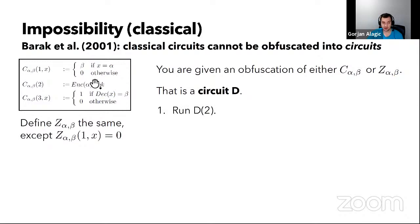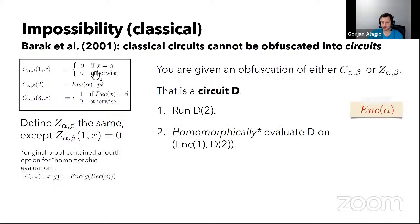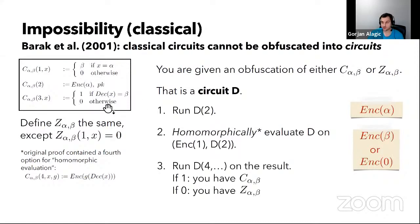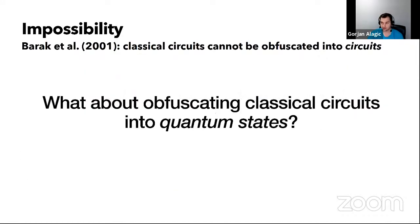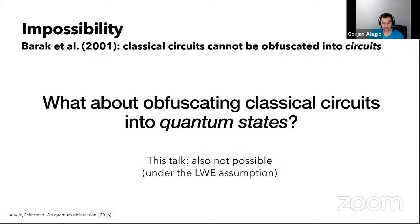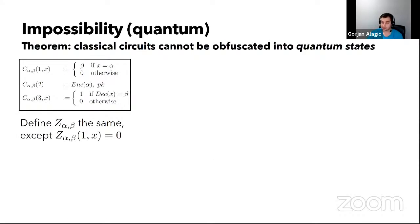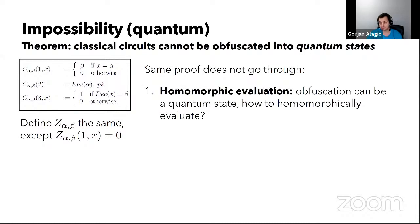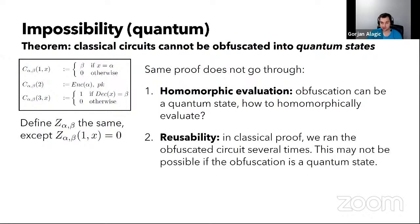It's pretty easy to tell with only oracle access that you can't distinguish these two families. However, with a circuit you can. The easiest way to see this nowadays is using homomorphic encryption. The first step is to simply extract this encryption of the special input, then to homomorphically evaluate the circuit on that. That gives you an encryption of the special output, and now you can use the checker part to see that you do indeed have a point function and not a zero function.